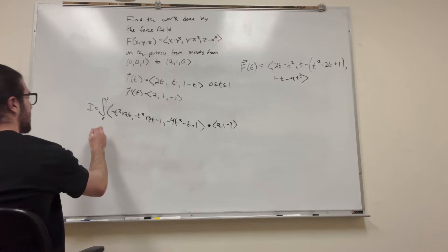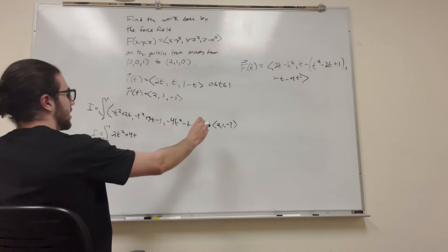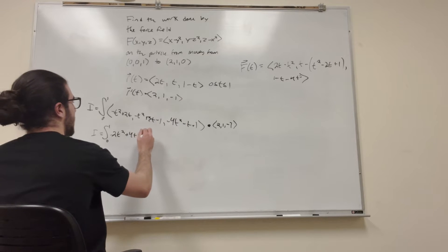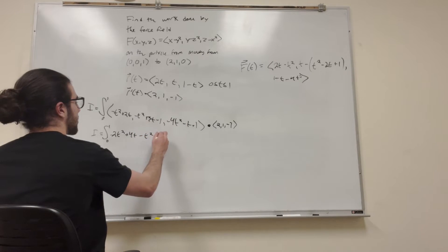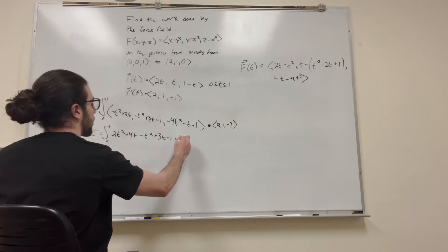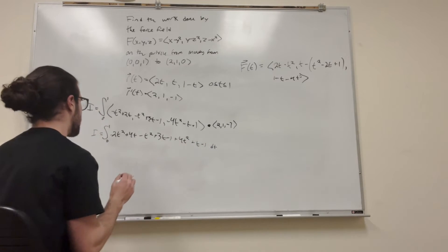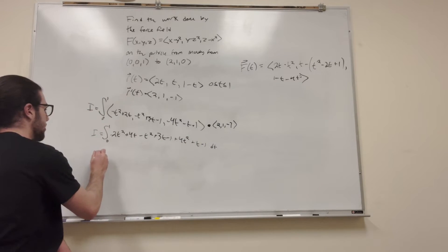All right, so dotted. And it's pretty easy to do this dot part because it's just simple. So it's going to be negative 2T squared plus 4T. So then it's just going to be 1. So it's going to be minus T squared plus 3T minus 1. And then negative 1, so plus 4T squared plus 2T. Right? Pretty simple.